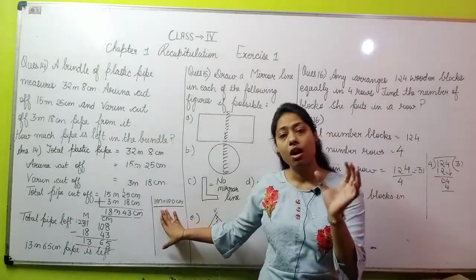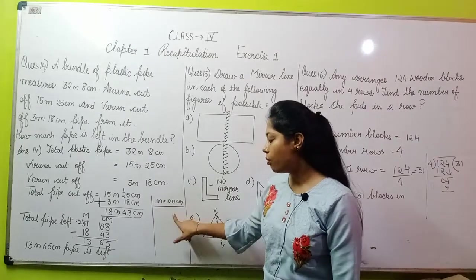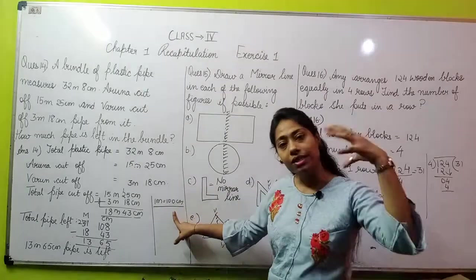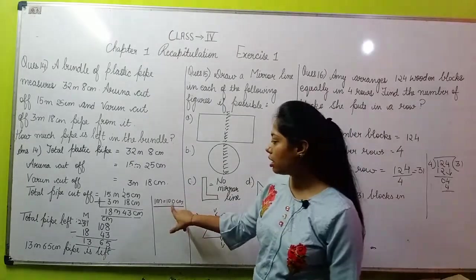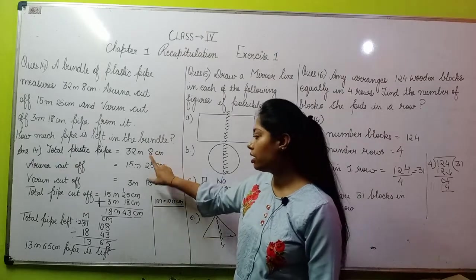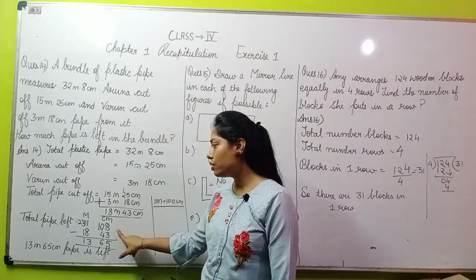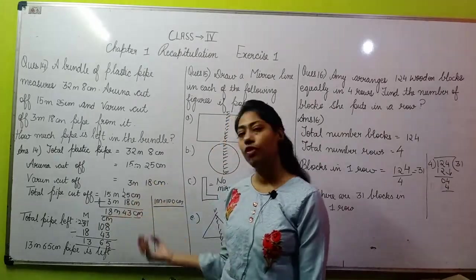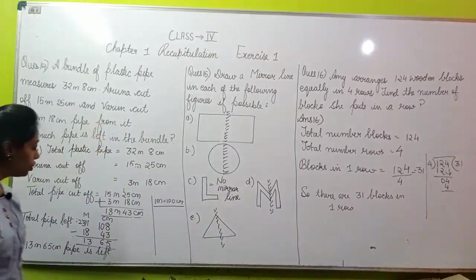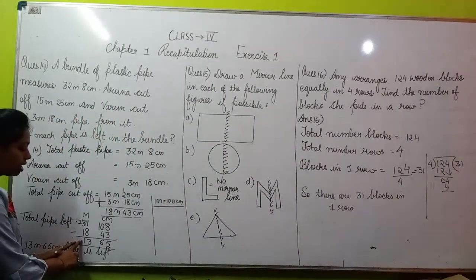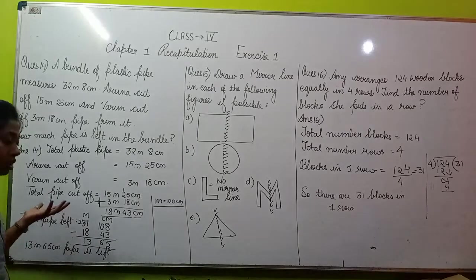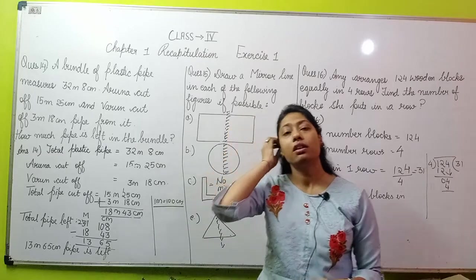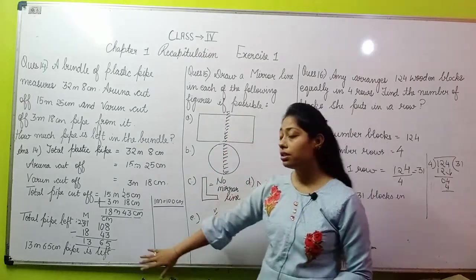1 meter is 100 centimeters - this is given, we are already told this in maths. So we add 100 to this, it becomes 108. After that, 108 has come, from this subtract the amount you just added - 18 meters 43 centimeters. When you subtract, you will get 13 meters 65 centimeters. This is the amount of pipe that is left. After subtracting everything, this portion is now remaining.